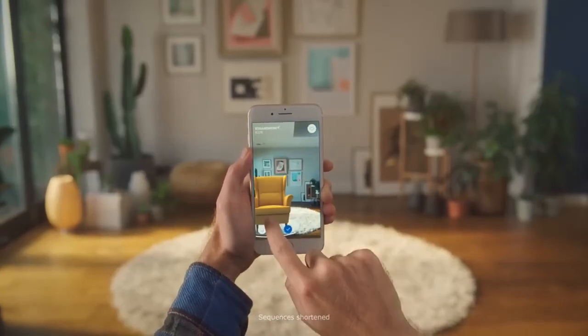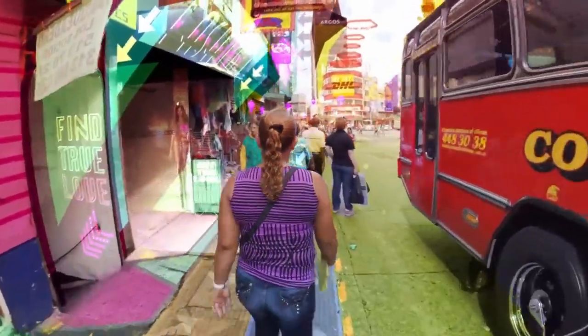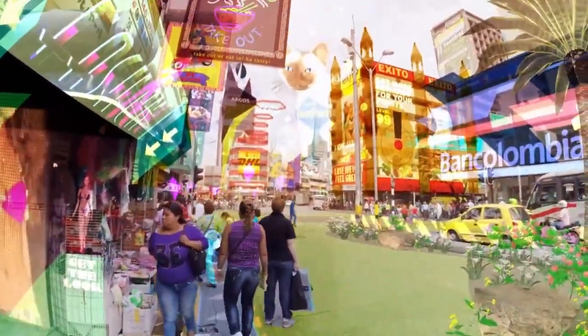We've all seen examples of augmented reality, virtual images that are overlapped with real-time world observations in order to offer more information about an object, location, or both.